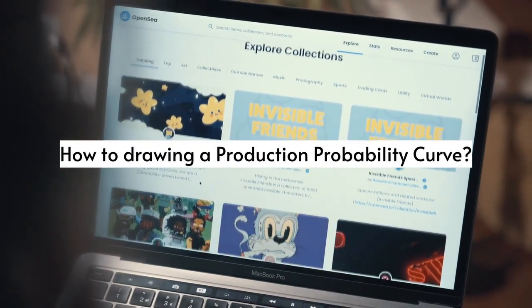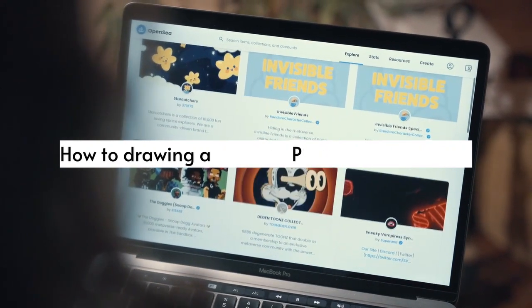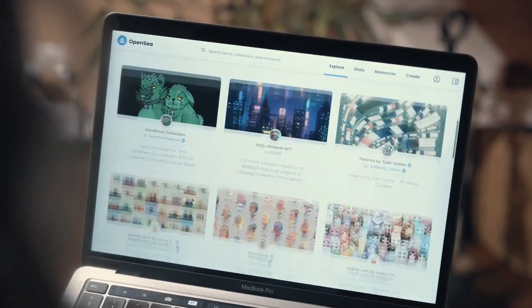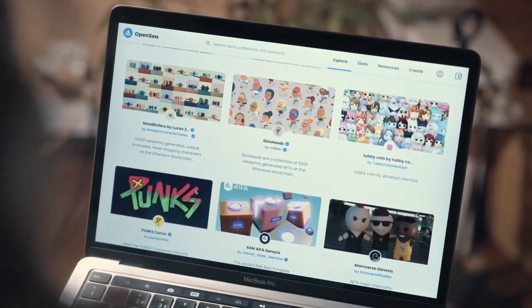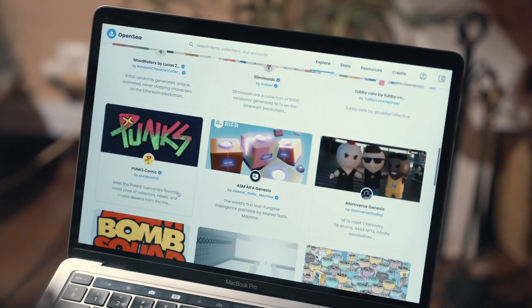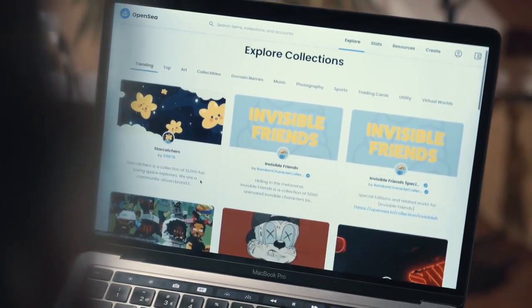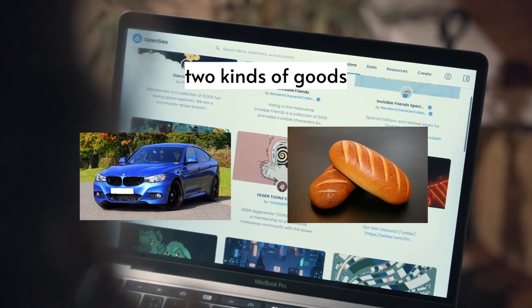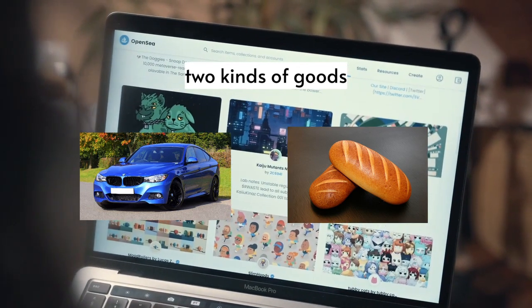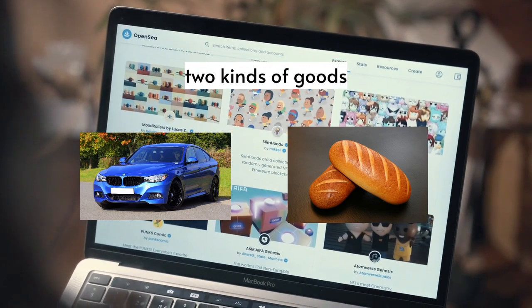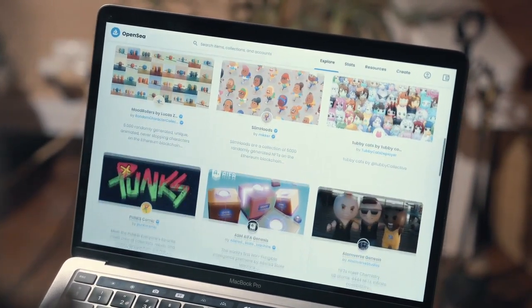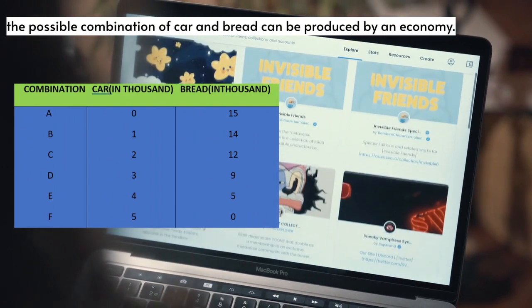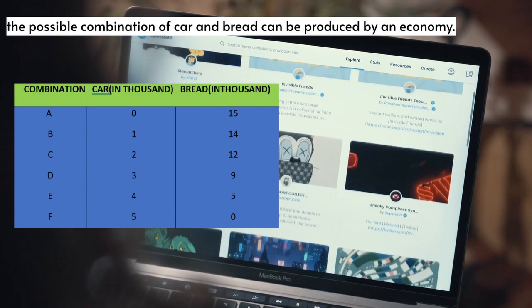Now, we want to know how to draw a PPC. In real situations, an economy is capable of producing thousands of goods and services. But to better understand this production possibility curve, we imagine an economy that only produces two kinds of goods, namely cars and bread. We assume that car and bread production together use all available production factors at a certain level of technology. Now, this is the possible combination of car and bread that can be produced by an economy. If we draw it in a graph, it would be like this.